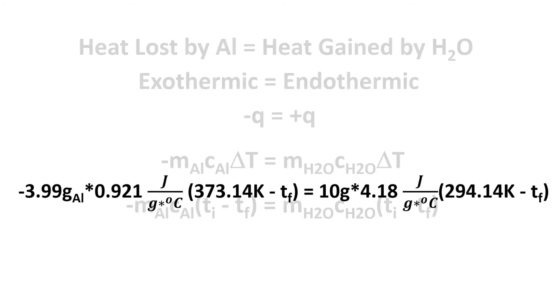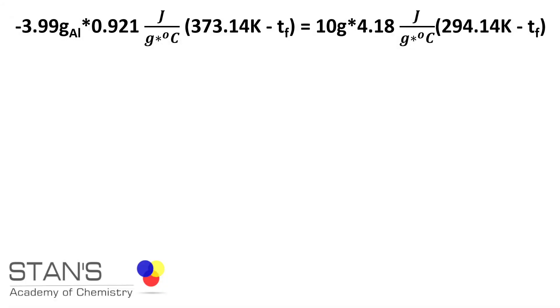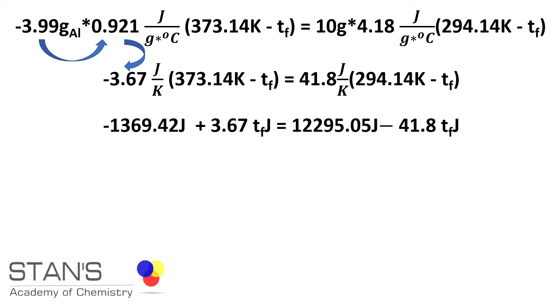Next, we will solve this equation to find the final temperature. Multiplying 3.99 by 0.921 we get 3.67. Solving or expanding the values in the bracket, 3.67 times 373.14 gives us 1369.42 Joules and 3.67 times Tf gives you 3.67 Tf.